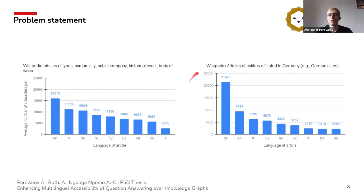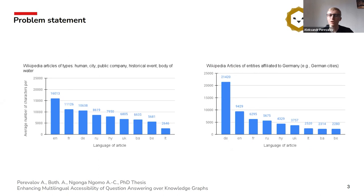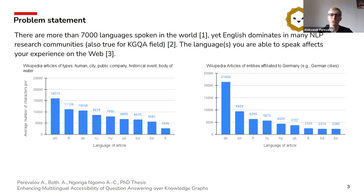However, if we draw attention to the right chart where we gathered data only about entities affiliated to Germany — German cities, German people, German events — we see that in German Wikipedia there is much more information on these entities than in English. That's obvious, of course. People in Germany know more about their own entities and their own cities. Despite that, we come to the conclusion that the languages people are able to speak really affect their experience on the web. This is called the 'digital language divide' in some sources. As we know, there are more than 7,000 languages spoken in the world, and English dominates in many research communities as well as on the web.